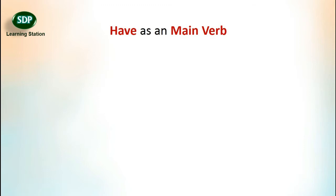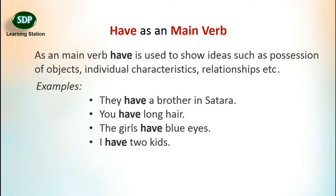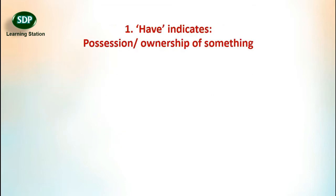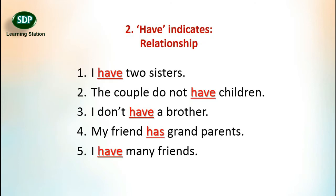As a main verb, 'have' is used to show ideas such as possession of objects, individual characteristics, relationships, etc. For example: 'They have a brother.' 'You have long hair.' 'The girls have blue eyes.' 'I have two kids.' 'My friend has a pet.' 'I have a new pen.' 'Do you have a cycle?' 'Our school has six computers.' 'The municipality has six vans and two cars.' 'I have two sisters.' 'The couple do not have children.' 'I don't have a brother.' 'My friend has grandparents.' 'I have many friends.'